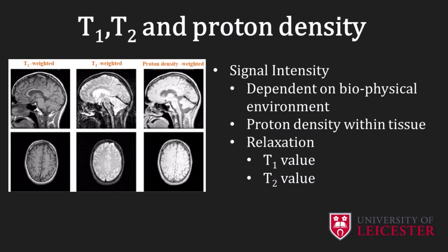The signal intensity of MRI images is dependent on the local magnetic fields that the hydrogen nuclei experience as well as the density of the hydrogen nuclei within the tissue. The biophysical environment of the water and fat molecules in the tissue affects the magnetic fields experienced by hydrogen nuclei, so different tissues have different T1 and T2. There are three basic types of images that can be produced by MRI: T1 weighted images, T2 weighted images, and proton density weighted images. T1 weighted images are optimized to show differences in T1 relaxation times, T2 weighted images show best the differences in tissue T2 relaxation times, and proton density weighted images distinguish best across different tissues with differences in tissue proton densities.